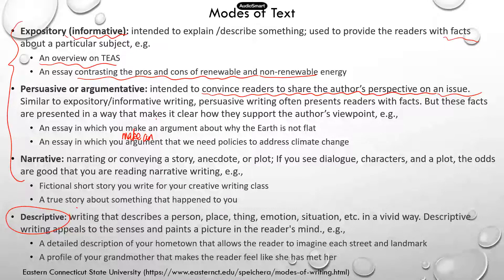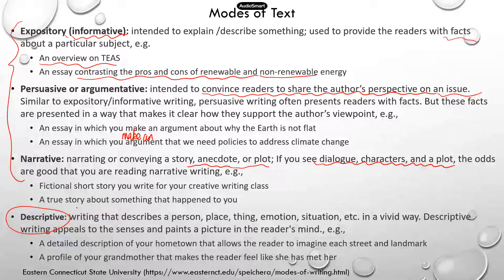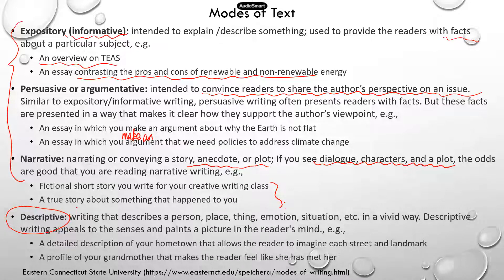Next is narrative. The writer narrates or conveys a story, anecdote, or a plot. Usually if you see dialogue, characters, or plot, it's probably narrative writing. A fictional story that you write for a creative writing class is narrative. Or it could be a true story about something that happened to you — maybe something really exciting in your childhood that you were writing about. That's going to be narrative.